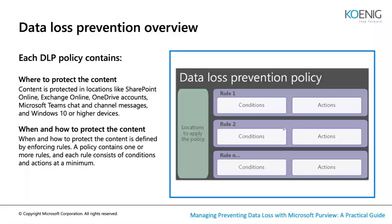Once you have the right locations and rules configured, the DLP policy works effectively. Whenever a user attempts to share or send an email, the system checks against DLP policy implementations. For example, a credit card policy will prevent any sharing attempt that matches. Let me show you a demo of how DLP prevents data from an end-user perspective — how powerful DLP can be.